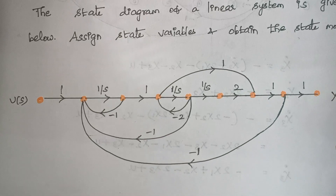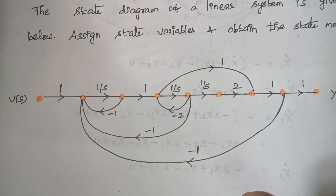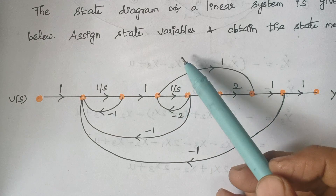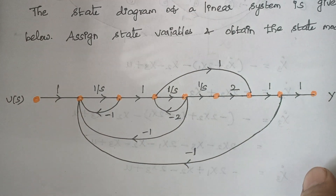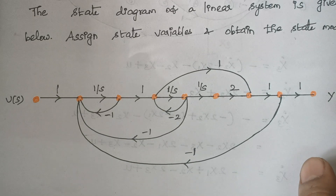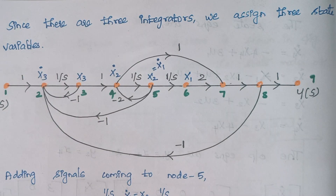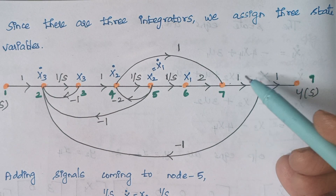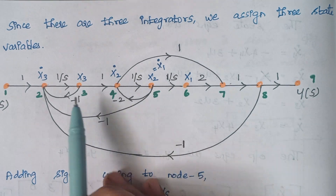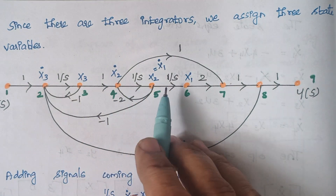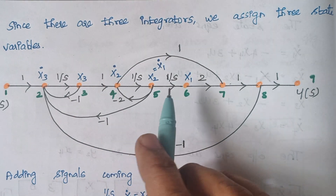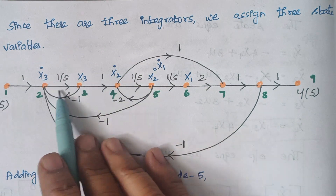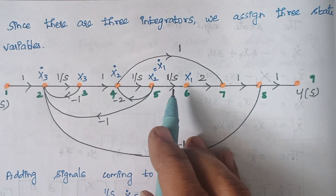This is the given signal flow graph. From the signal flow graph, we have to assign the state variables and obtain the state model. The state model is a combination of state equation and output equation in matrix form. Here, from the signal flow graph, when you look carefully, we are having one 1/S, one 1/S, and one 1/S term. They indirectly represent the integrators. So totally we are having three 1/S terms, which means there are three integrators.